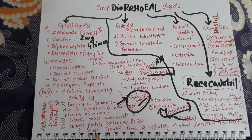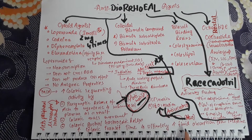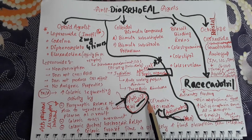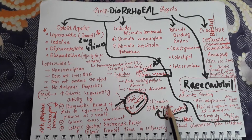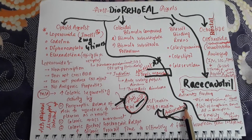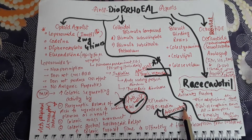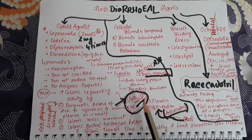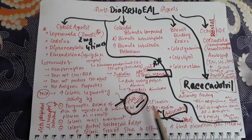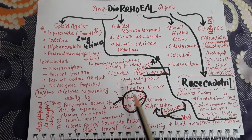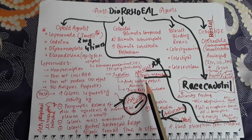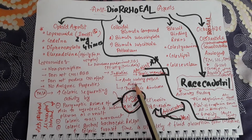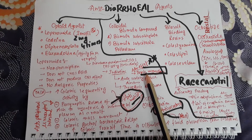As a result, colonic transit time is increased, and loperamide also causes fluid absorption from the intestine, so water is not secreted into the colon and chloride is not secreted into the colon. This is the anti-secretory mechanism of action of loperamide. So loperamide has two actions: anti-motility and anti-secretory. Through these two actions, loperamide prevents diarrhea. It is mainly used in traveler's diarrhea and also in acute watery profuse diarrhea.